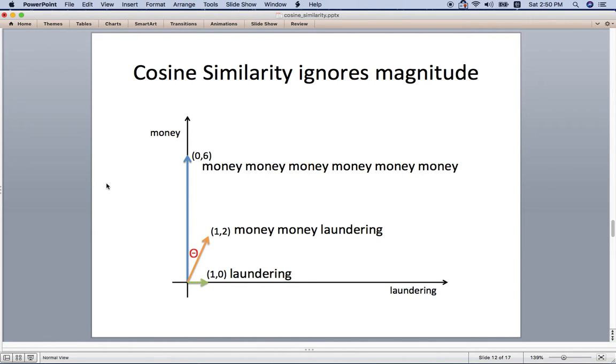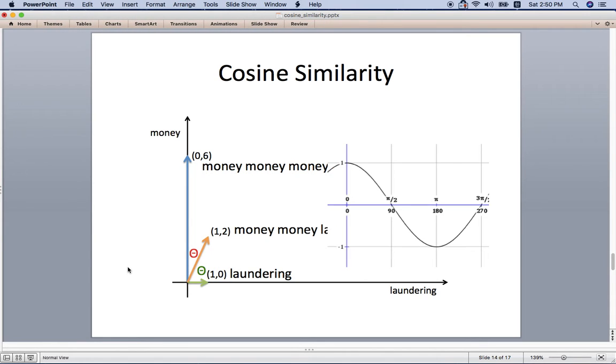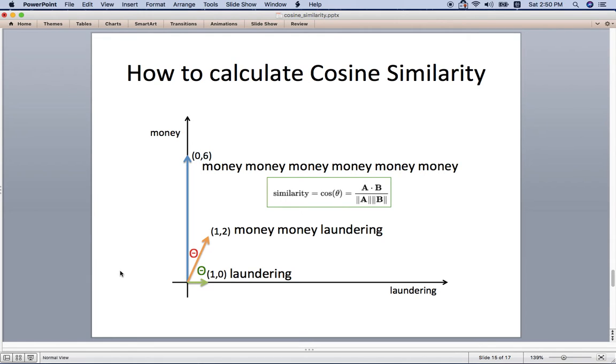So you can see this red theta here - the angle between this blue and orange line - and you can see the green theta here between the orange and green vectors. Here I'm showing the cosine function. If theta is zero, then you have the highest value of one. If theta is 90, it is zero which is the lowest value. So if theta is smaller, that means we have higher similarity. If theta is closer to 90, that's lower similarity.